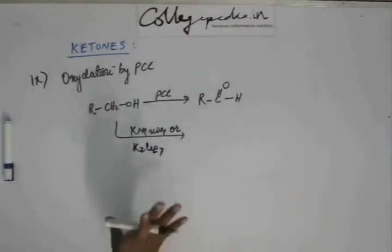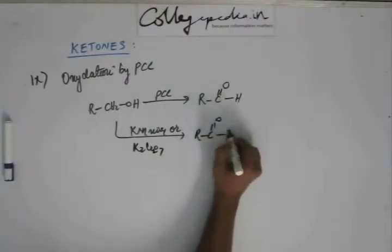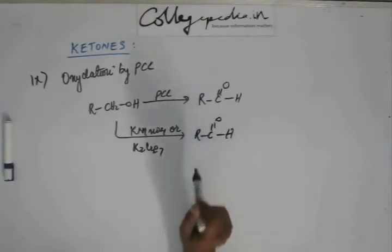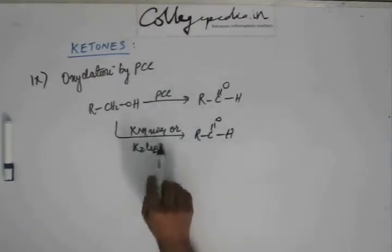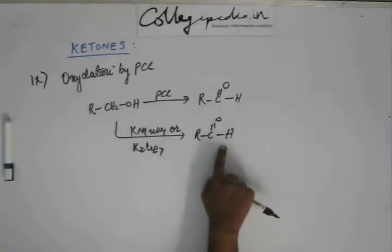First, of course, they will oxidize this alcohol to aldehyde but the reaction will never stop at this stage. Now this aldehyde is so susceptible to oxidation that these strong, ruthless oxidizing agents will always result in carboxylic acid as the final product.